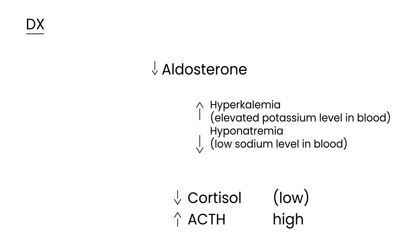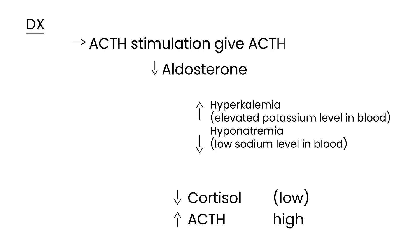There's one other diagnostic test called the ACTH stimulation test. You give the person ACTH as an IM or IV injection and then measure cortisol levels. In Addison's disease, cortisol levels will remain low because the ACTH you've given is not able to act on the adrenal gland — the adrenal gland is simply not functioning.